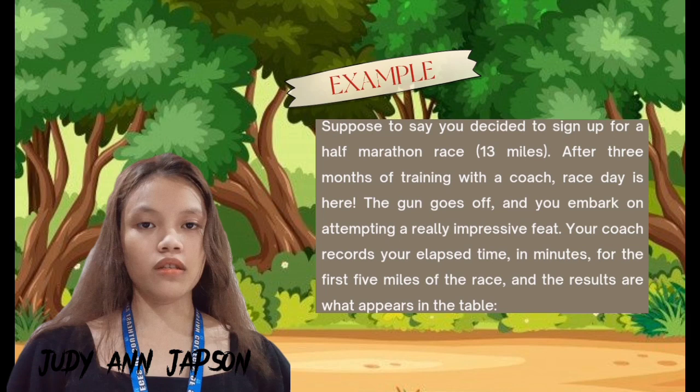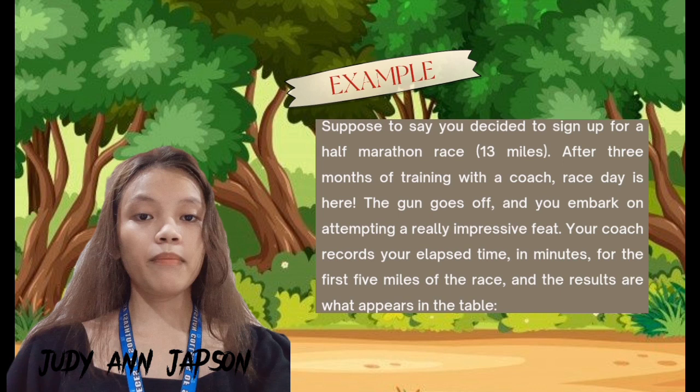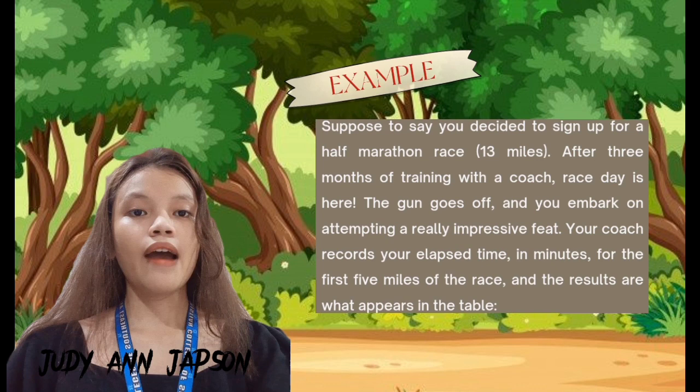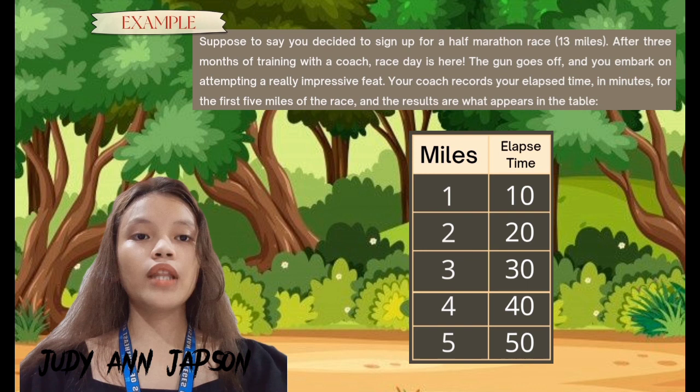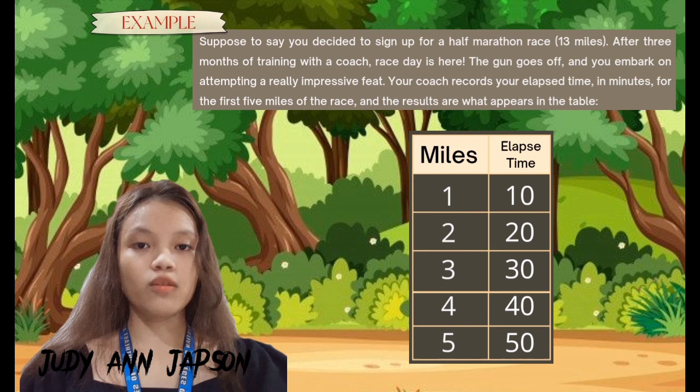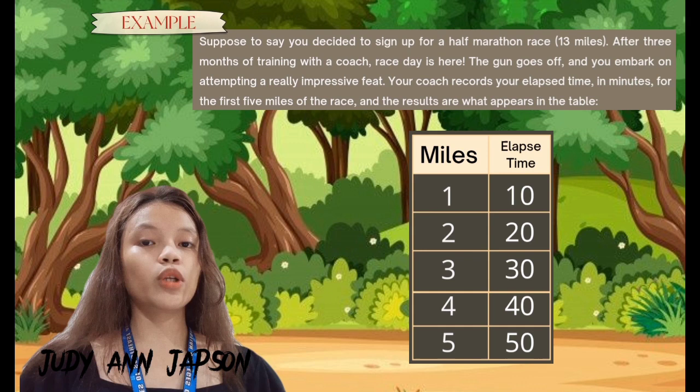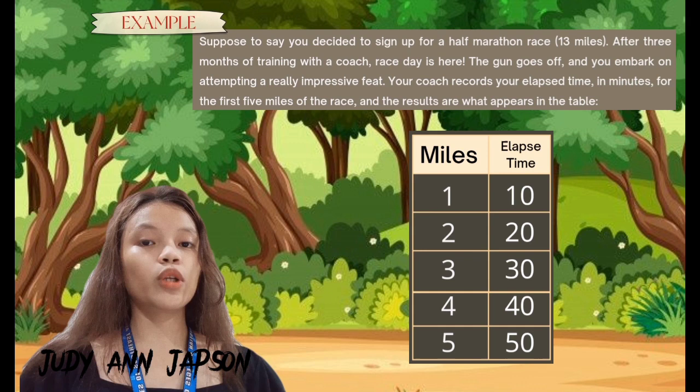Suppose you decided to sign up for a half marathon. After three months of training with a coach, the gun goes off and you embark on attempting a really impressive feat. Your coach records your elapsed time in minutes for the first five miles of the race. Using the elapsed time recorded for the first five miles, the coach is able to predict the total elapsed time to complete the race. Every time the miles go up by one, the elapsed time goes up by ten as well. The elapsed time can be found by multiplying the mile number by ten — so 13 miles times 10 equals 130 minutes elapsed.